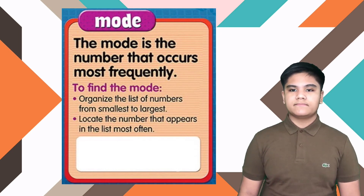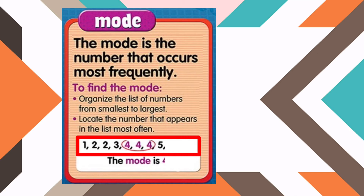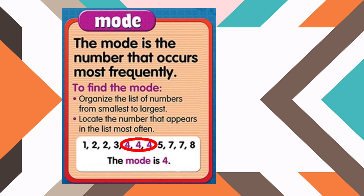For example: 1, 2, 2, 3, 4, 4, 4, 5, 6, 7, 8, 9, 9, 10, 14. Therefore, the mode is 4 because the number 4 is the number that occurs most frequently in the sequence.